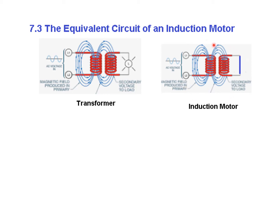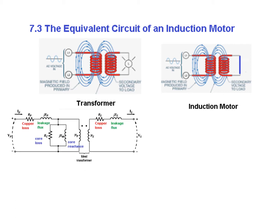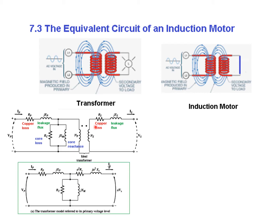To understand the equivalent circuit of an induction motor we will take help of the equivalent circuit of a transformer. The transformer equivalent circuit is represented with the copper loss and leakage flux on the primary side, and the core loss and core reactance. On the secondary side we also have the copper loss and leakage. To solve this, we transform either the primary circuit to the secondary or the secondary to the primary side. The resultant circuit has the secondary side transformed to the primary side, multiplied by the transformation ratio. A similar circuit applies for the induction motor.